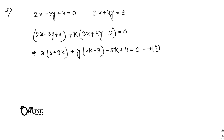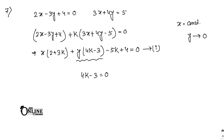Now, as the line is drawn parallel to the y-axis, a line parallel to the y-axis has equation x equal to constant. So definitely the coefficient of y in this equation will be 0. Remember that: coefficient of y equal to 0 means 4k minus 3 equal to 0. So you can write down k equal to 3 by 4. It's very easy.